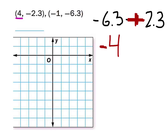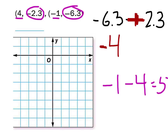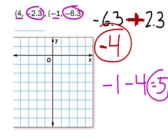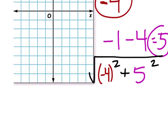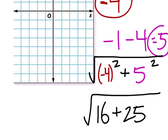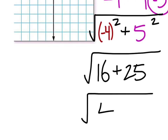Now let's look at the change in the x's. We did the first y minus the second y, so we're going to do the same thing for the x's. Negative 1 minus 4 is negative 5. To find the distance between these two points, I'm going to take this negative 4 and the negative 5, take the square root, and square them. So I've got negative 4 squared plus negative 5 squared, giving me the square root of 16 plus 25, which is the square root of 41.